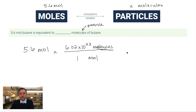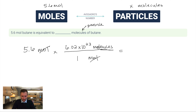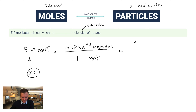Moles cancels out, and all I have to do is multiply 5.6 by 6.02×10²³. My calculator gives a big number: 3.37×10²⁴. I round to two significant figures because that's how many were in my starting amount, so the final answer is 3.4×10²⁴ molecules.